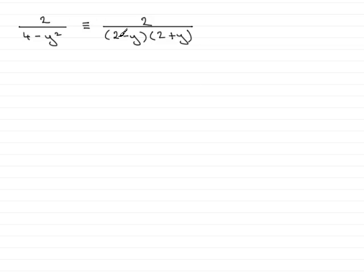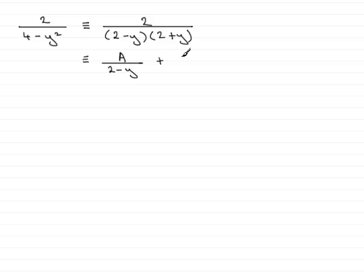When you have linear factors as we have here, the partial fractions are of the type: a constant — let's say A — over the first linear factor, 2 minus y, plus another constant — let's call it B — over the second linear factor, 2 plus y.